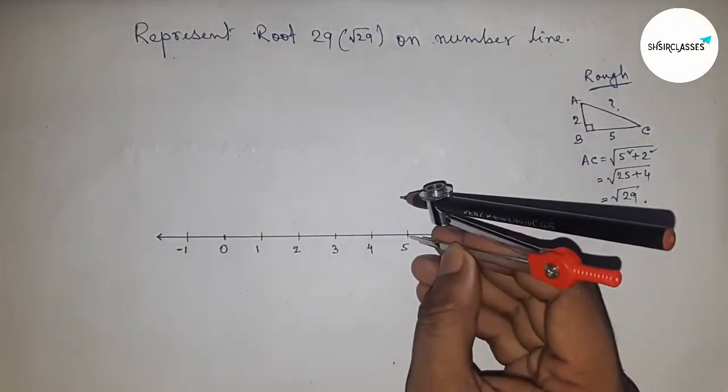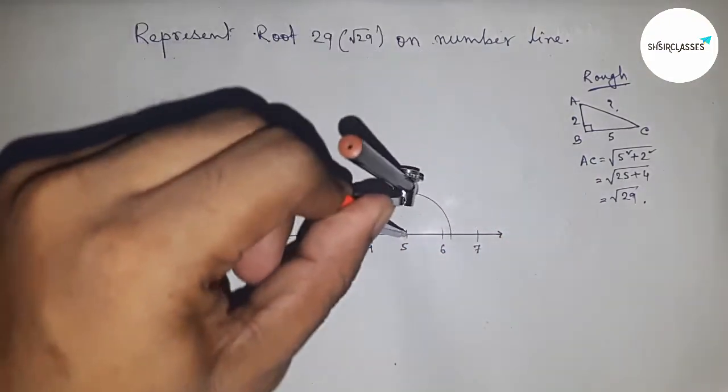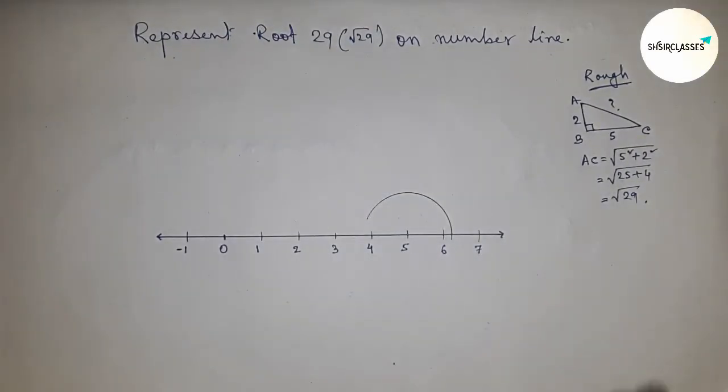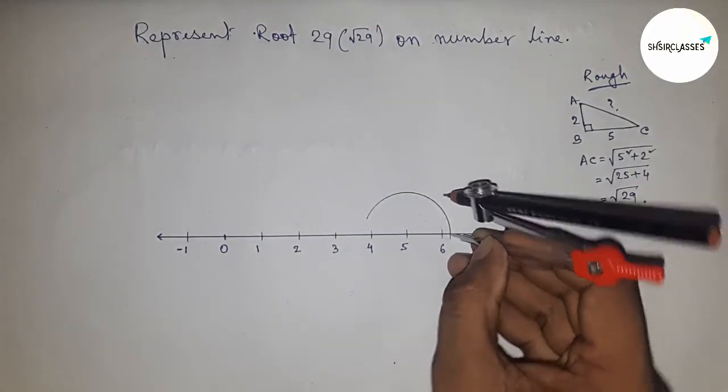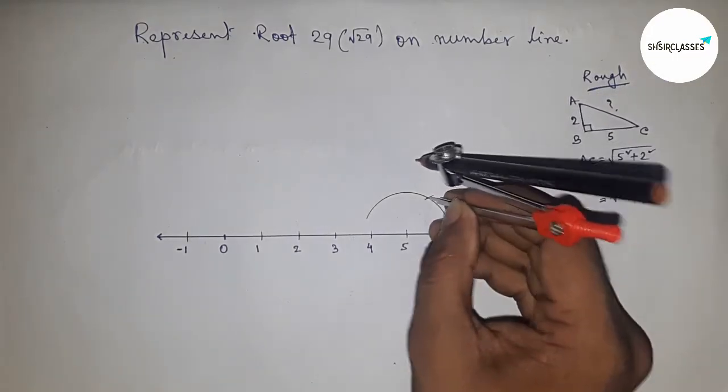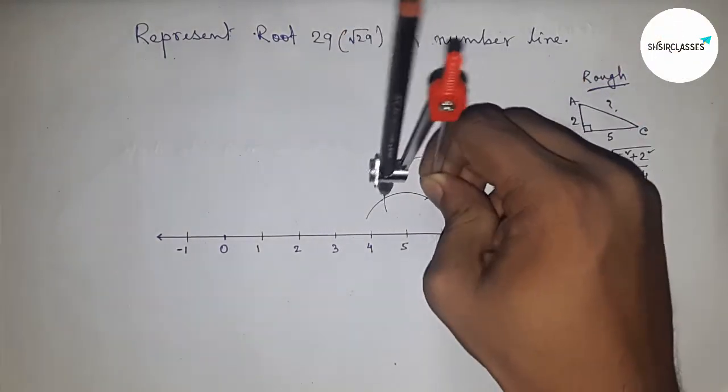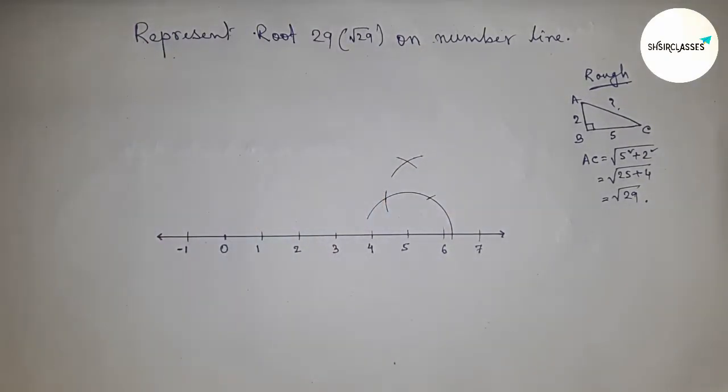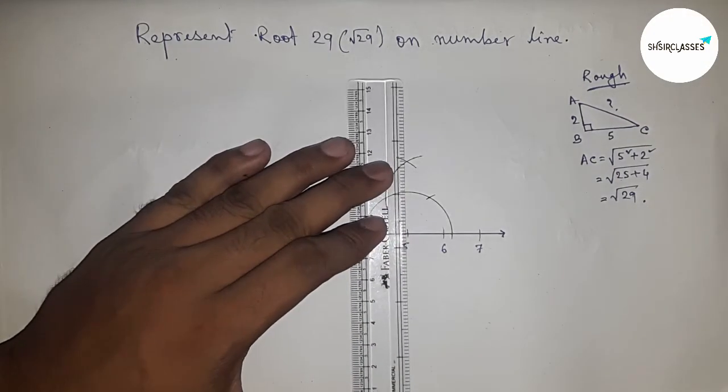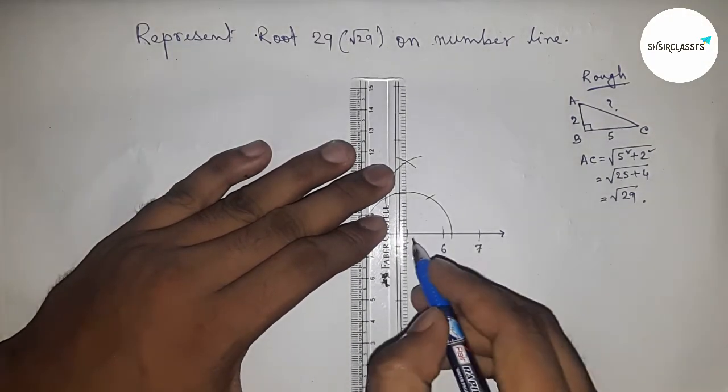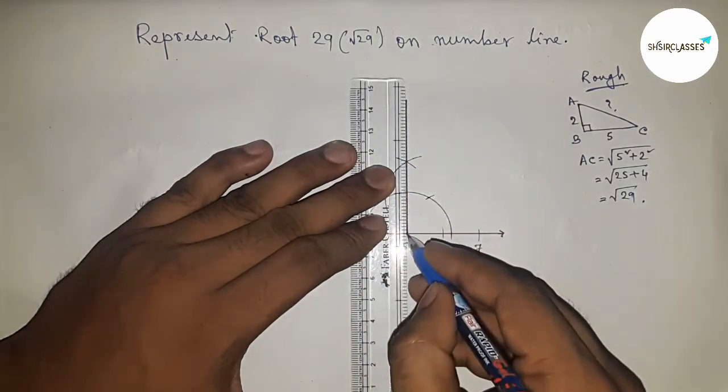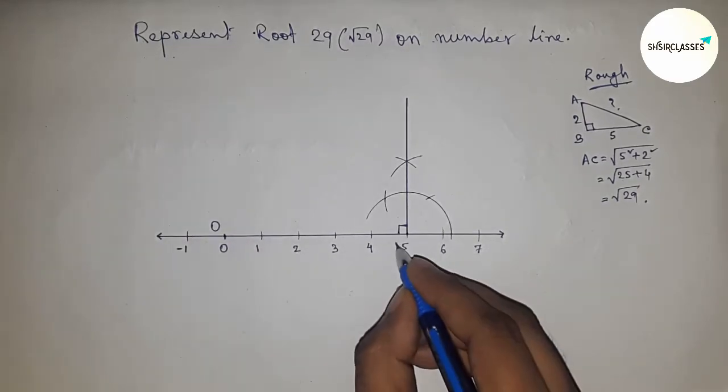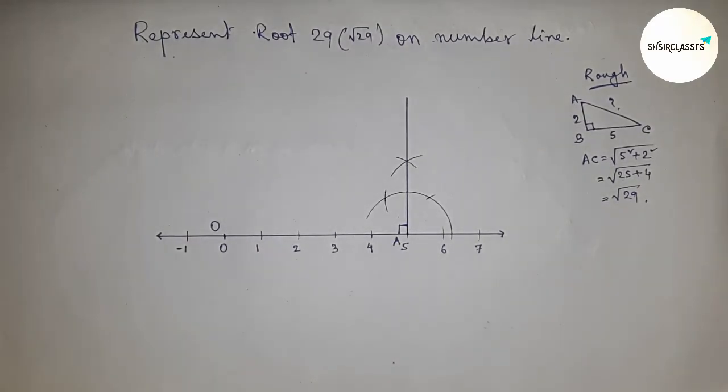First, drawing a 90-degree angle at point 5. If you don't know how to construct 90 degrees, then first watch my video which I give in my channel. Drawing 90 degrees on 5, now joining this to get 90 degrees at point 5. So we got 90 degrees. This is O point and this is A point.